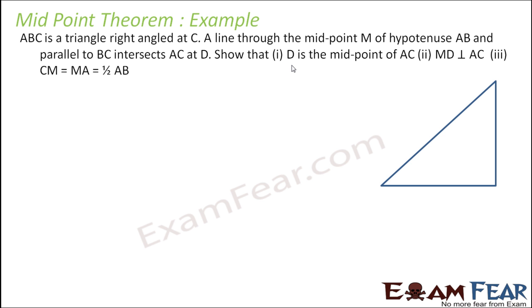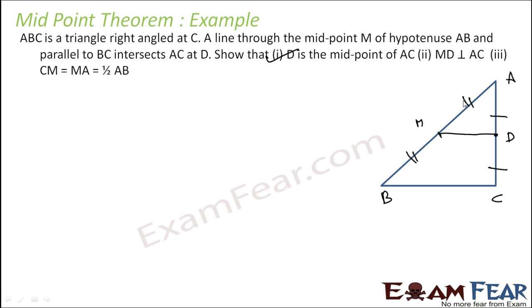ABC is a triangle right-angled at C. A line through the midpoint M of hypotenuse AB, parallel to BC, intersects AC at D. We have to prove that D is the midpoint of AC. Since MD is parallel to BC and M is the midpoint of AB, by the midpoint theorem D will be the midpoint of AC. So AD equals DC and AM equals MB.